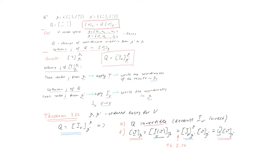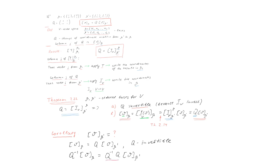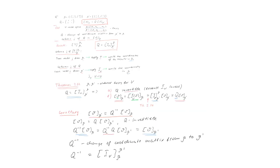Now we are ready to answer the other question: how can we find the coordinates in beta prime if we know the coordinates in beta? The result follows directly from parts A and B. From B we have the identity, and from A we know Q is invertible, so we can multiply both sides by the inverse of Q. By the definition of the inverse, this gives the identity matrix, and we conclude that the coordinates in beta prime equal Q inverse times the coordinates in beta. Therefore Q inverse is the change of coordinate matrix from beta to beta prime.